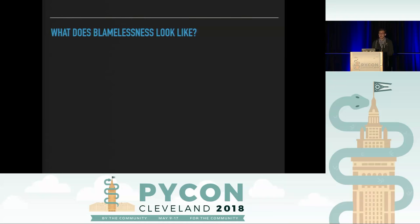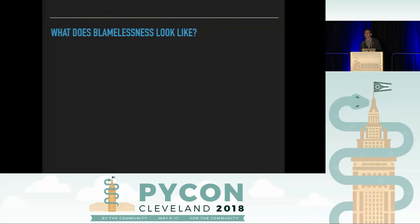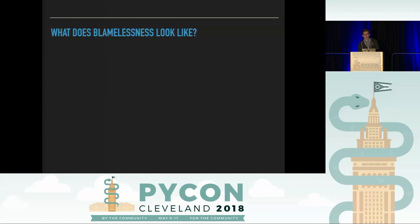You may have heard the phrase 'blameless postmortem' before. This refers to exactly what I was just talking about: postmortems are for finding systemic improvements, not for finding out who to blame. It's very frequent that when something goes wrong, we can look for somebody we could say is responsible — the person who pushed the code to production, the person who ran the administrative script, the person who developed the pull request. I want to give an example of what blamelessness actually looks like, because it is so important to this process.